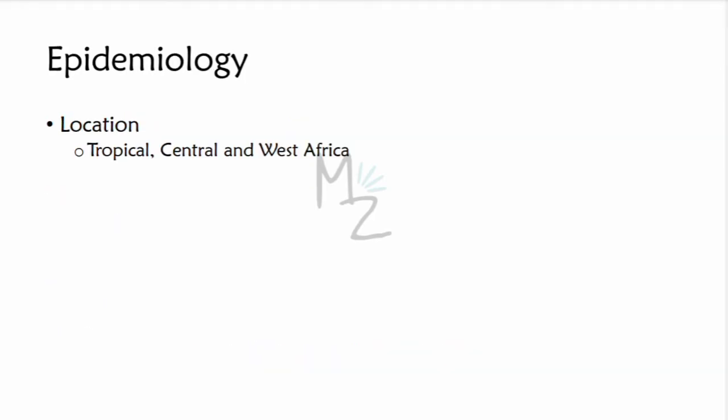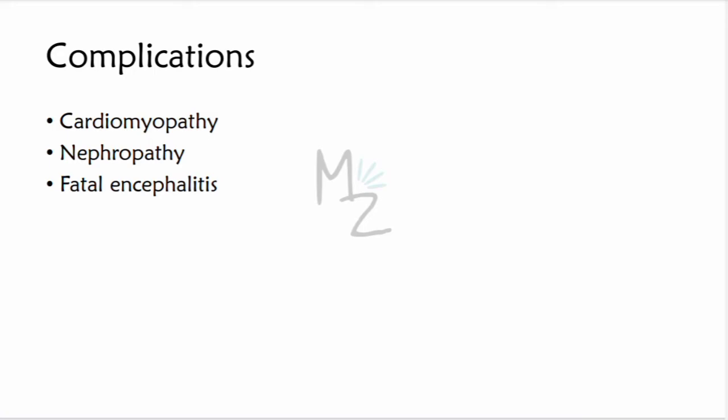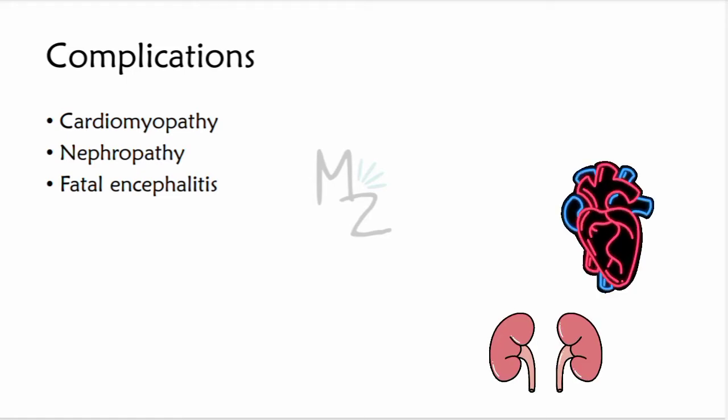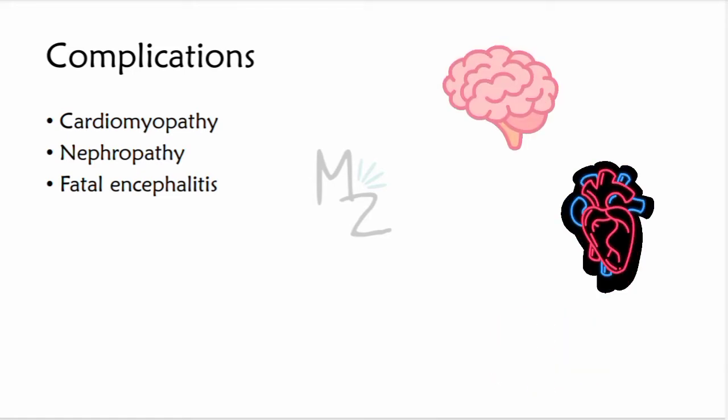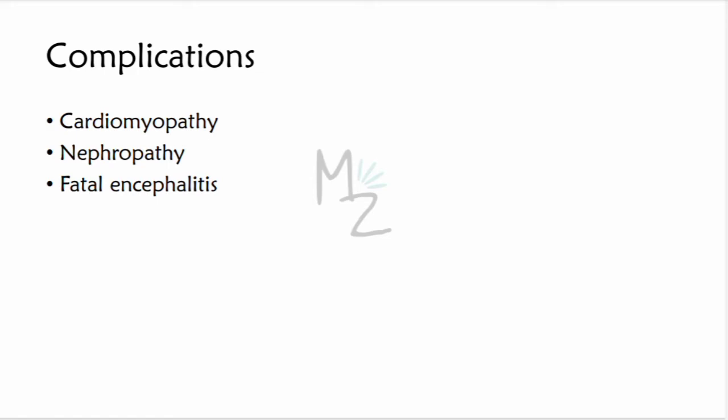Epidemiology: the disease is found only in tropical, central, and west Africa — the habitat of the vector Chrysops. When the worm enters the blood, it can travel throughout the body to the heart, kidneys, brain, and other vital organs. Complications include cardiomyopathy, nephropathy, and fatal encephalitis.